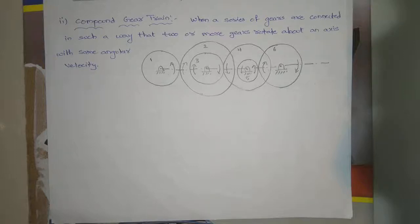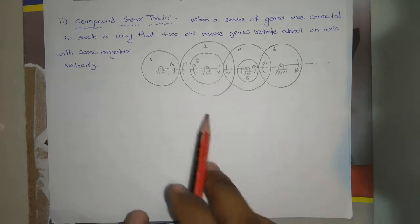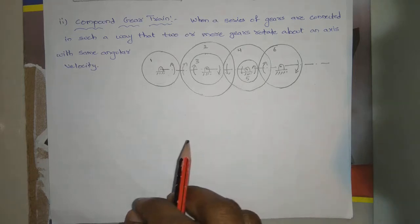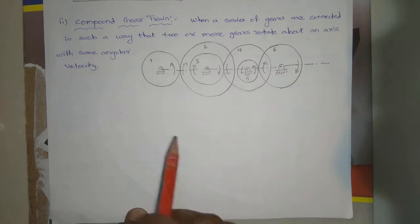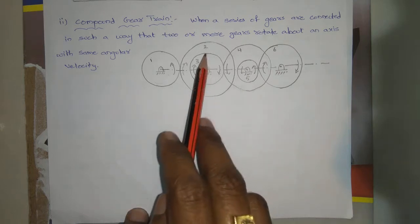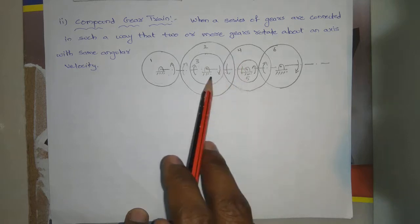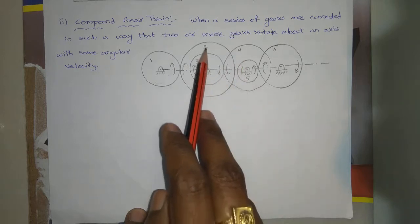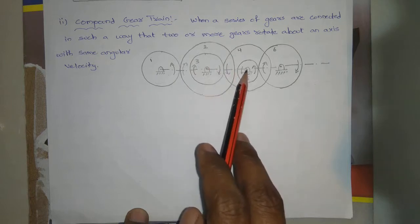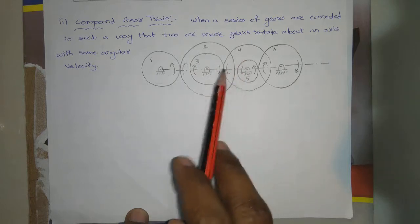Hello everyone. In lecture one we discussed simple gear trains, and here we are going to discuss compound gear trains. Here is the diagram of a compound gear train. You can observe that the second and third gears, and the fourth and fifth gears, are fitted on a common shaft.